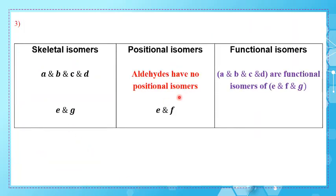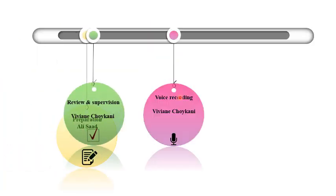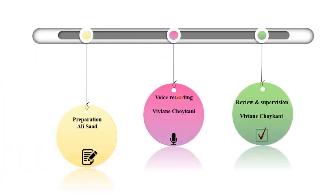Don't forget that aldehydes have no positional isomers. Please pause and check what you need to do on the agenda. See you in the next video — thanks!